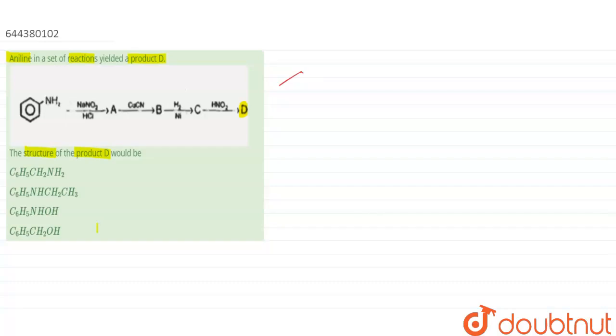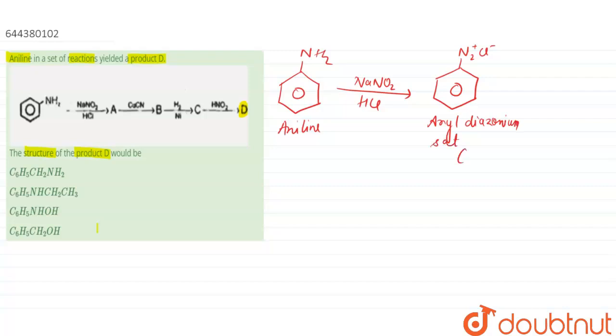Let us write the reaction here. We have been given aniline. When this aniline reacts with NaNO2, this is diazonium salt in presence of HCl, it forms an aryl diazonium salt. This is our product A.